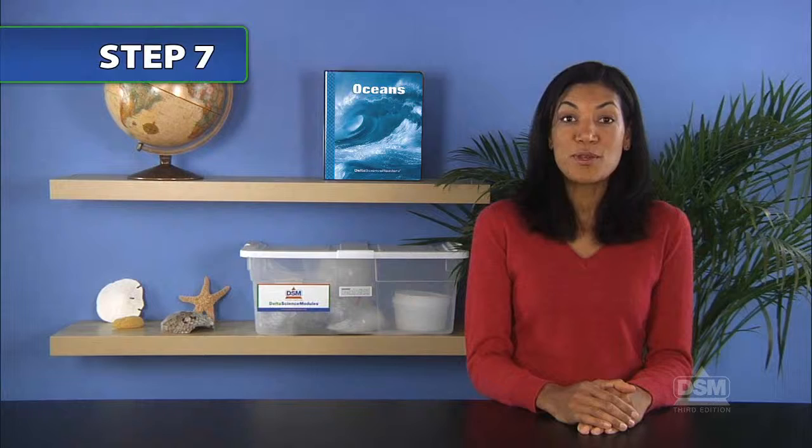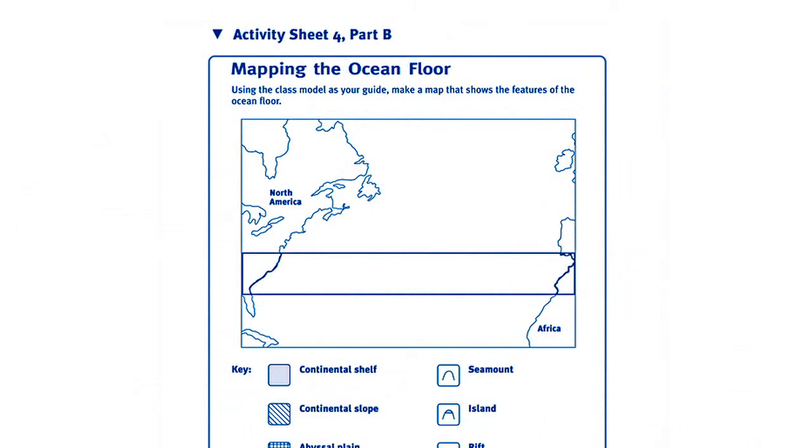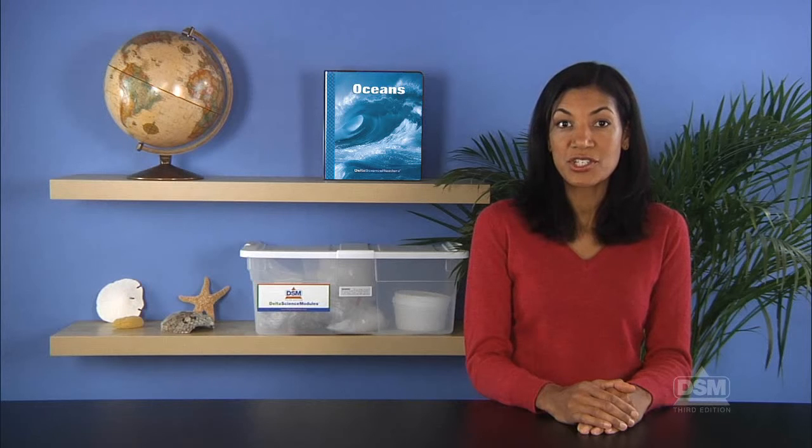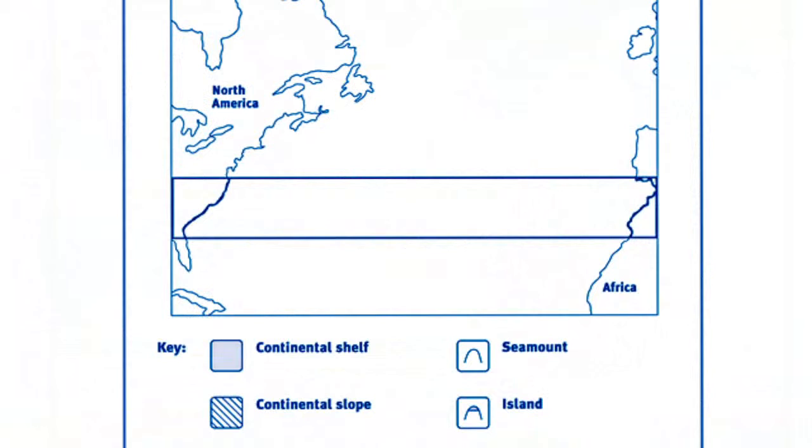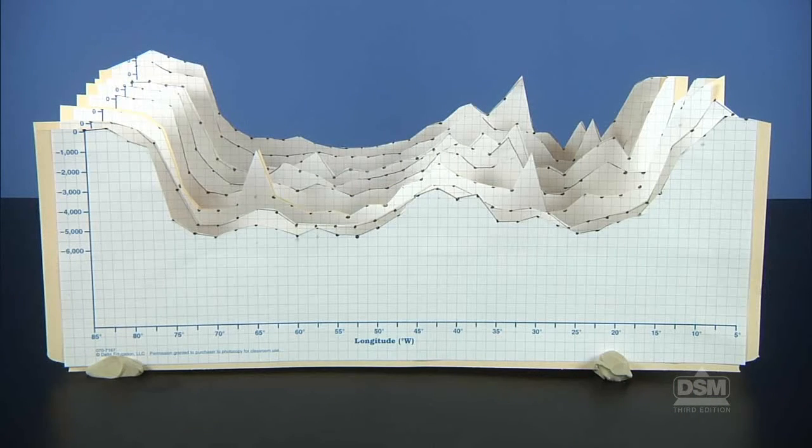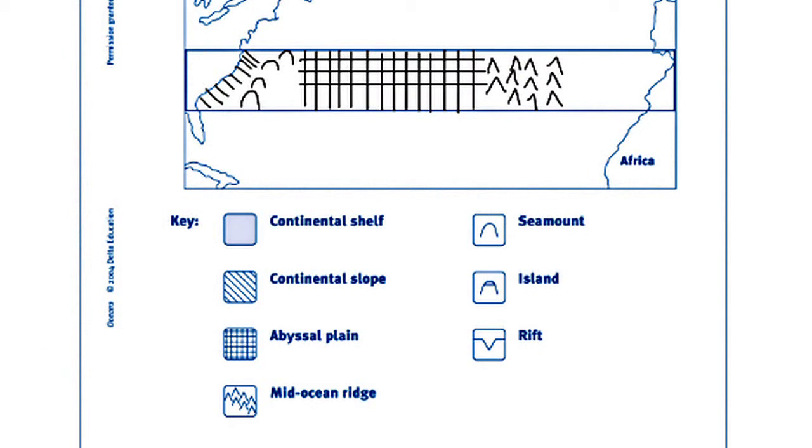Then, distribute Activity Sheet 4 Part B, and inform students that their model represents the section of the Atlantic Ocean outlined by the box on the Activity Sheet map. Ask students to use their model to complete the map. Tell them to refer to the key at the bottom of the sheet and to use these symbols to represent the different landforms on their map.